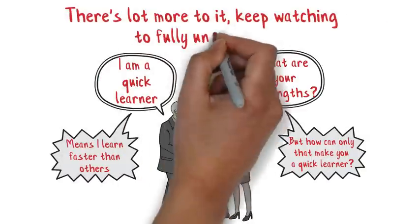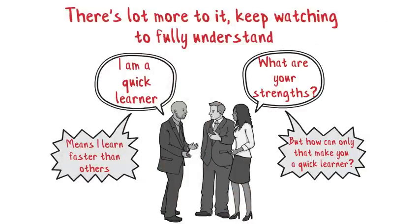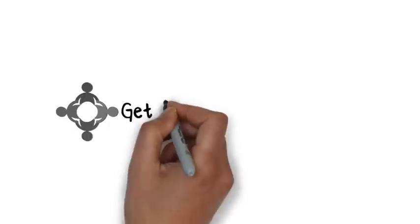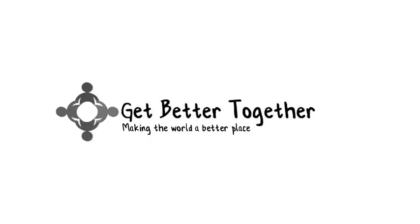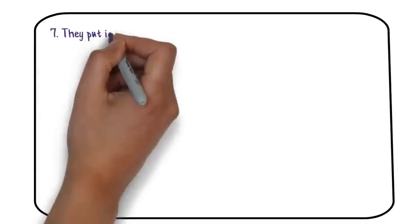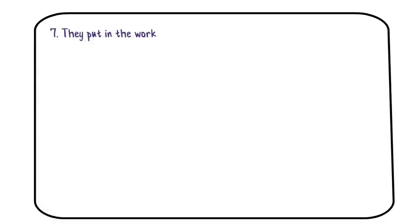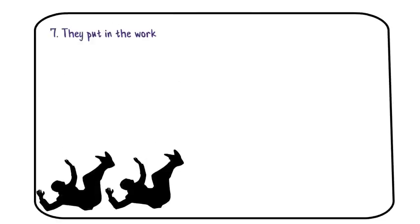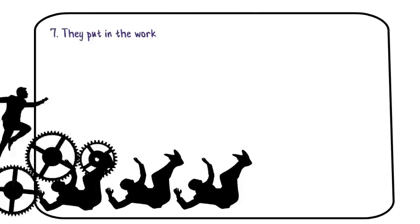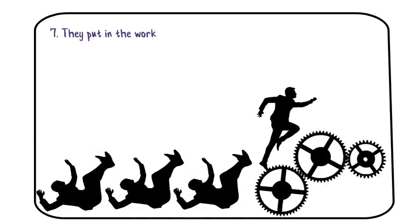Let's begin. Number seven: they put in the work. When you're learning something new, you have to be willing to fail. You have to be willing to create a lot of garbage before you're able to create anything useful, and you have to be okay with the process of what it takes to go from awful to average to good to great.